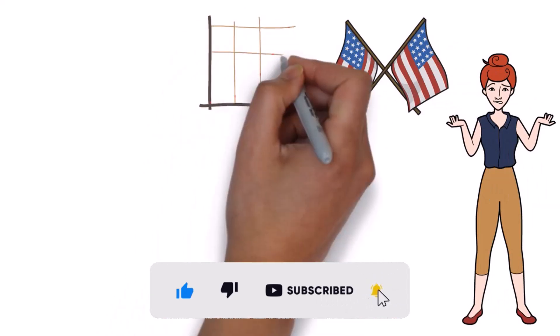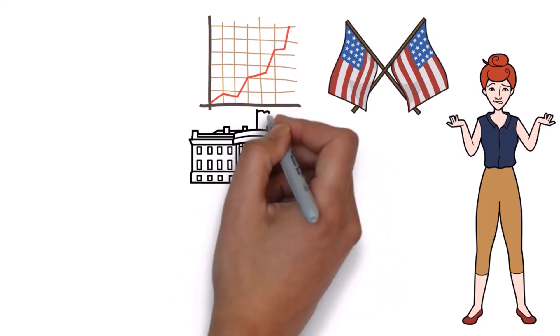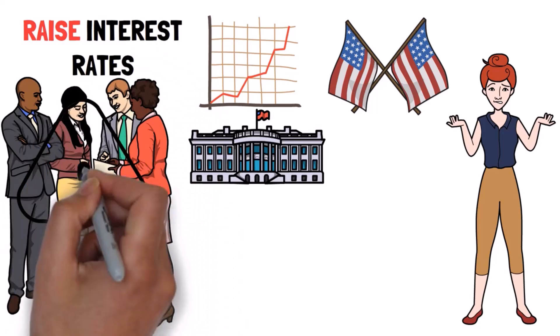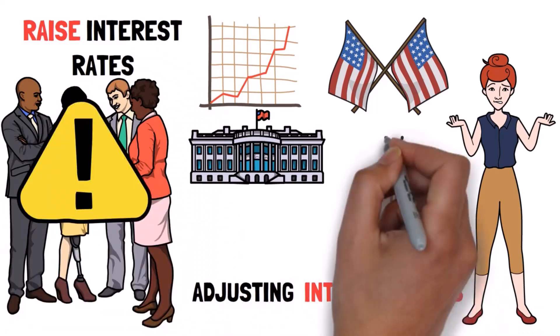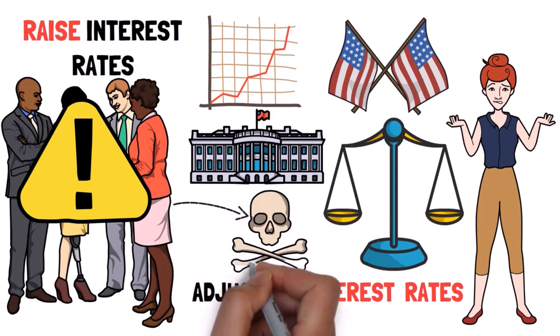The current inflation rate is soaring through the roof. The Federal Reserve considers it to be too high and is planning to raise interest rates. This poses risks because adjusting interest rates requires a delicate balance, and if not done carefully, it can cause significant harm.